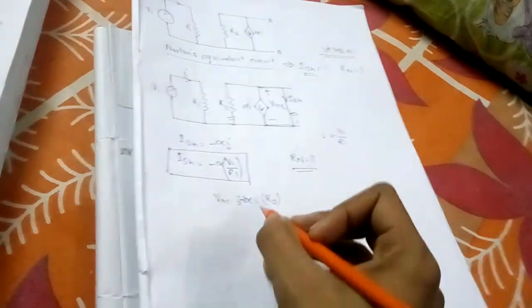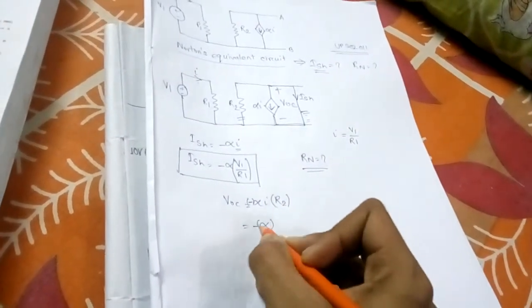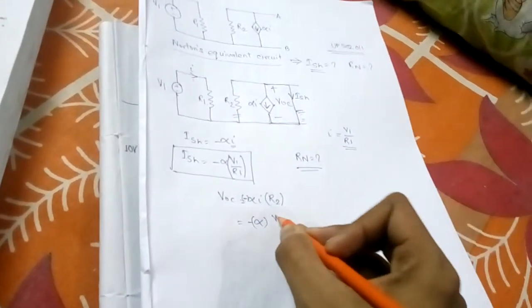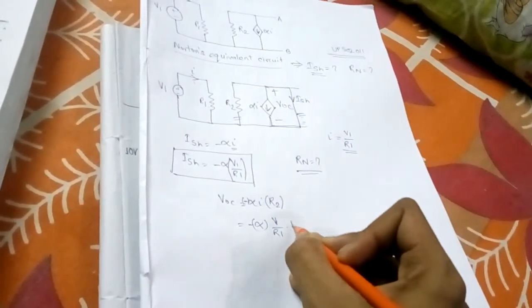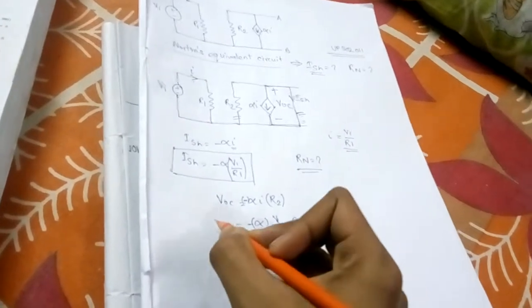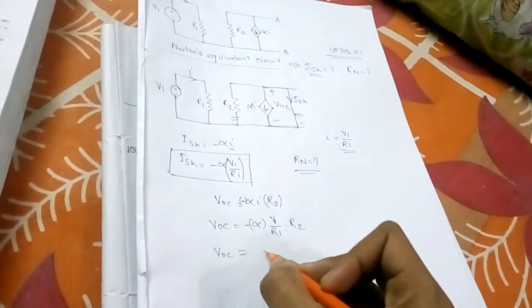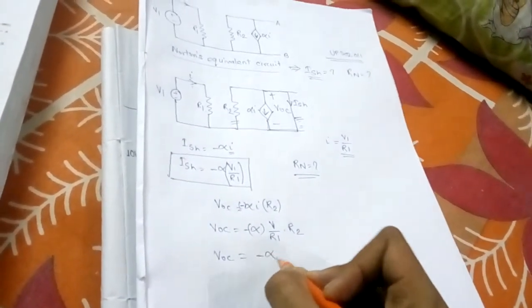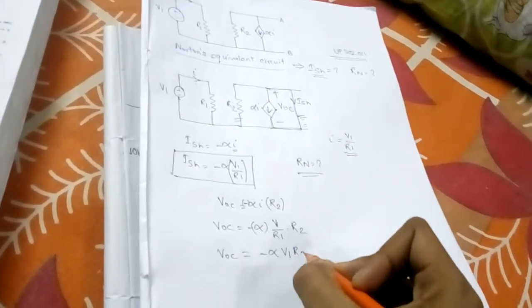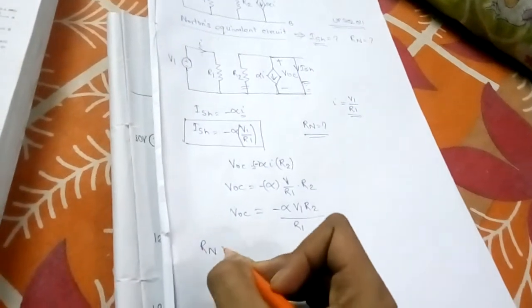Now, I is V1/R1, so V_OC equals minus alpha·(V1/R1)·R2, which gives V_OC = minus alpha·V1·R2 / R1.